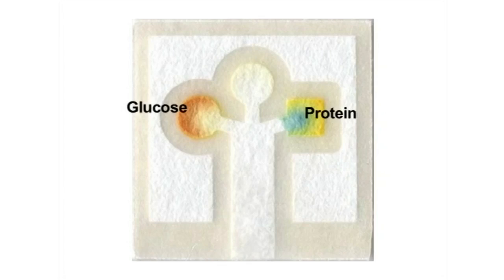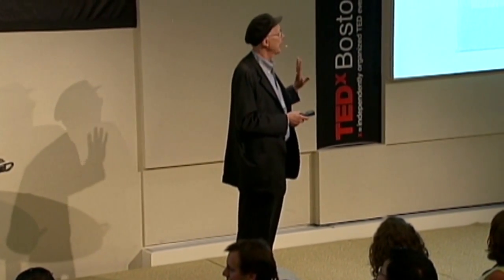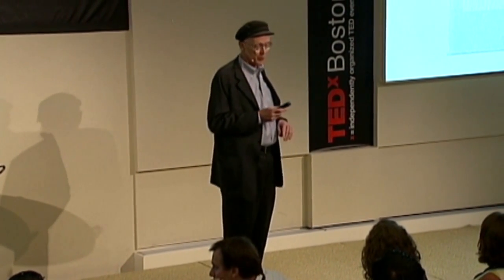In this device, the idea is that you dip the bottom end into a drop of urine. The fluid wicks its way into those chambers at the top. The brown color indicates the amount of glucose in the urine; the blue color indicates the amount of protein in the urine. The combination of those two is a first-order shot at a number of useful diagnostic results. This is an example of a device made from a simple piece of paper.